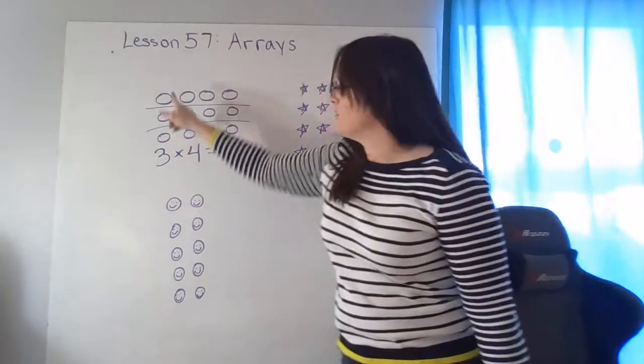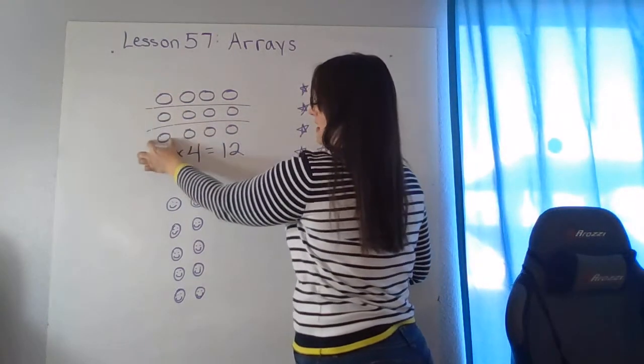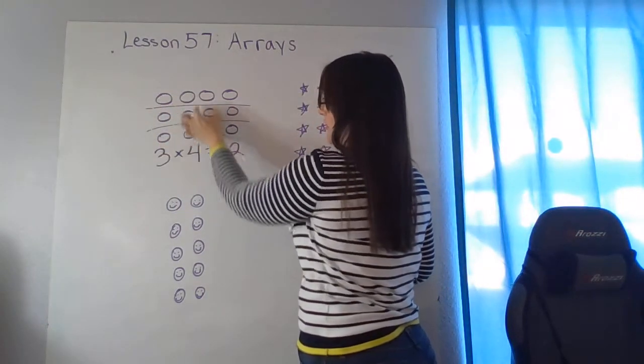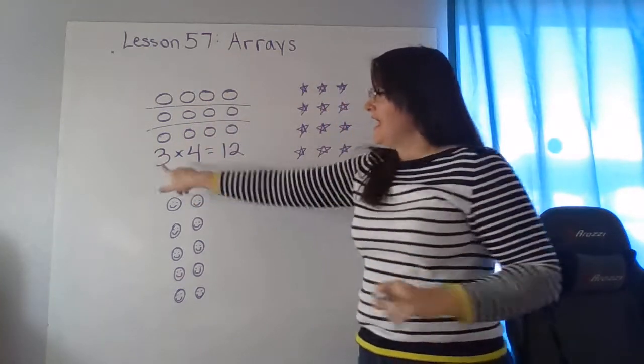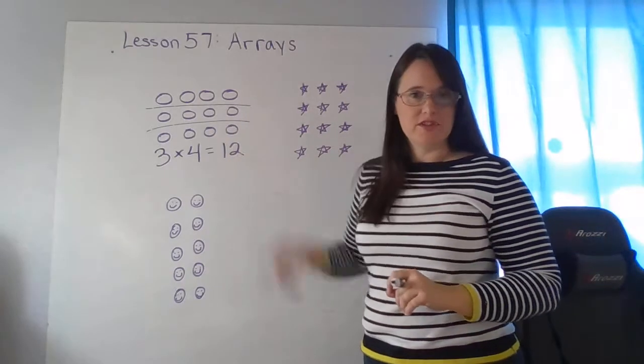I count my rows three. I count my columns. So this is column one, two, three, four. And three rows times four columns gives me a total of twelve circles.